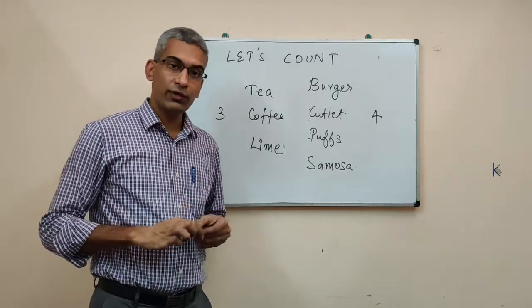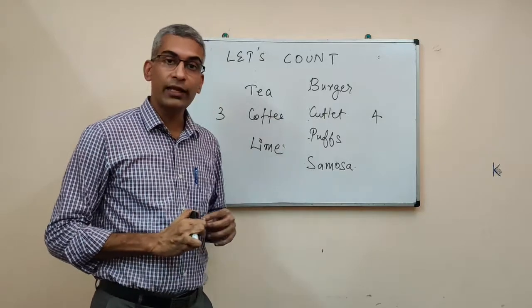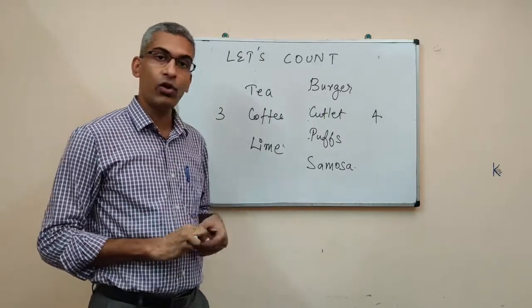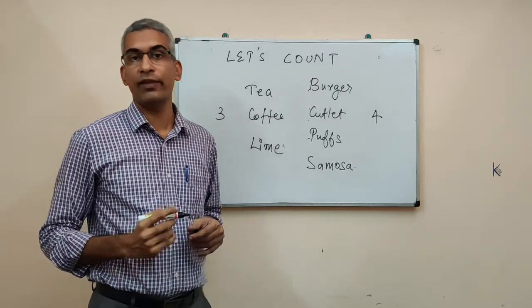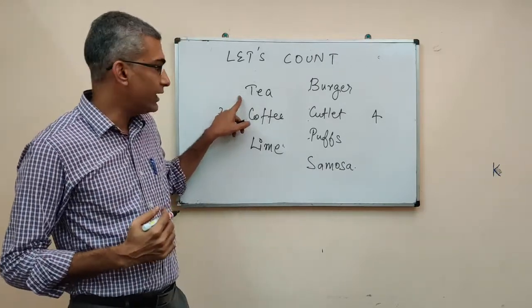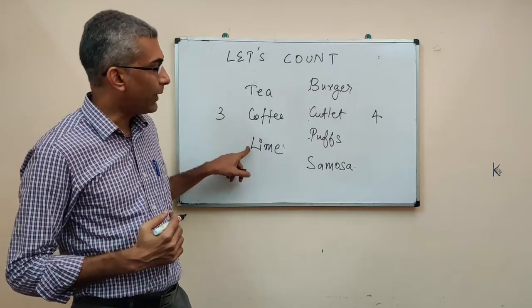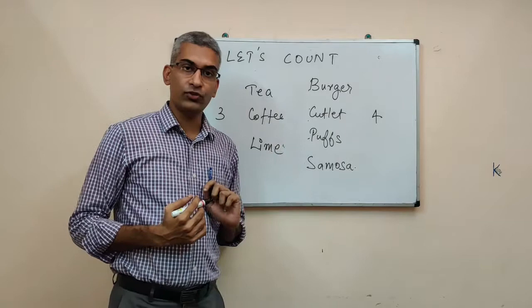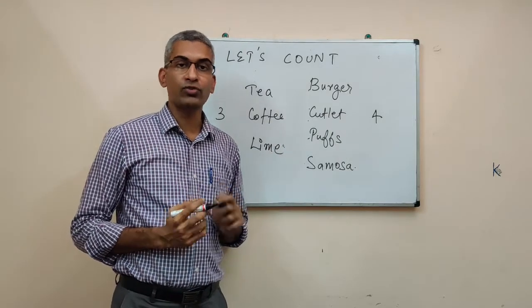So, even though you wanted both a drink and a snack, the situation does not allow that. You can have either a drink or a snack. Let us see how many different ways you can have it. You could either have a tea or a coffee or a lime or a burger or a cutlet or a puffs or a samosa. Total number of possibilities will be seven.